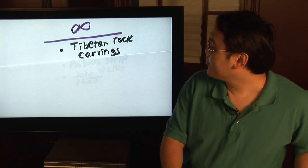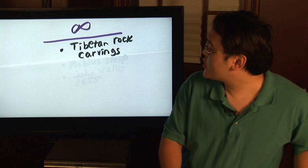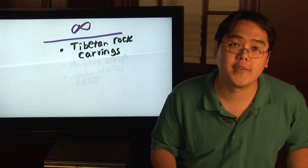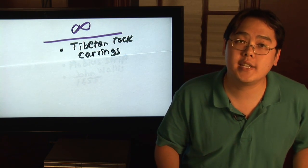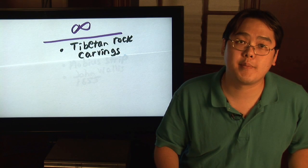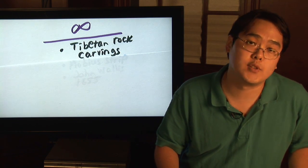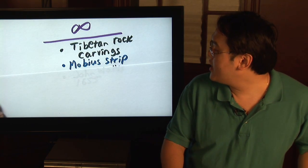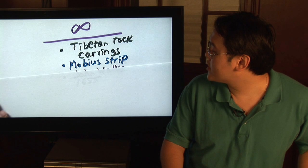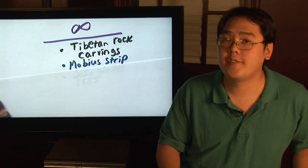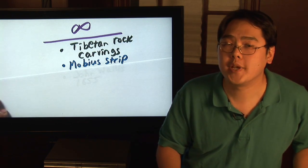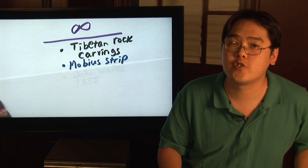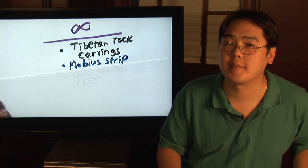Now, originally it was thought that the symbol itself appeared in Tibetan rock carvings. Whether it became the symbol for infinity at that particular time is really unknown. Some folks thought the idea for the symbol being infinity came from the Mobius strip, but it was later disproved to be not true because of a time conflict.